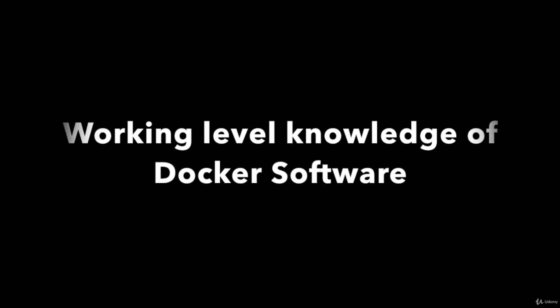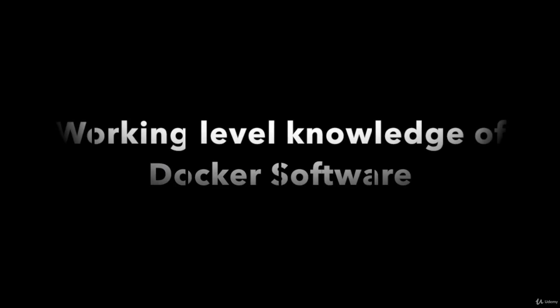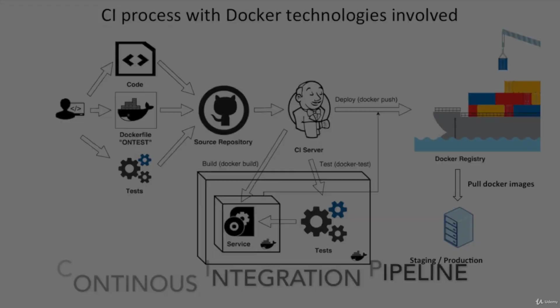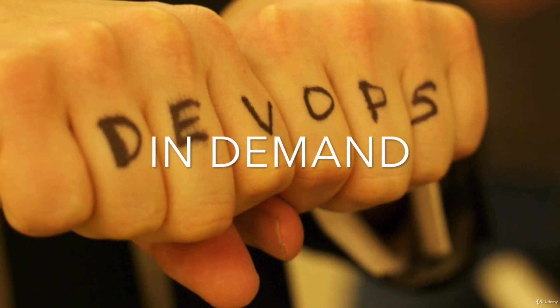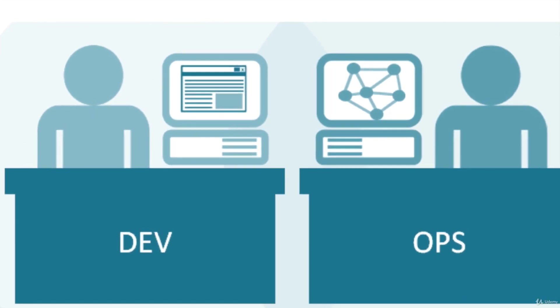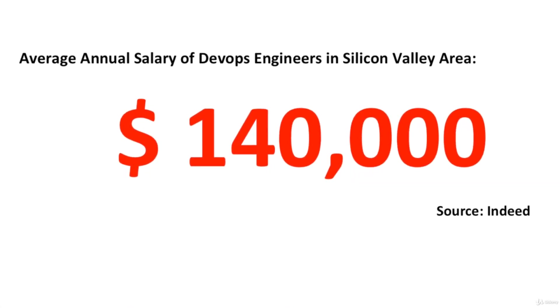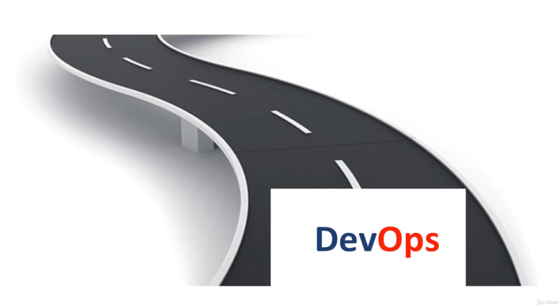At the end of this course, you're not only going to gain working-level knowledge of Docker software, but you'll also learn useful DevOps skills such as setting up continuous integration pipelines. DevOps engineers are in great demand in the IT industry. Companies are looking for developers who can develop and deploy applications. The average salary of a DevOps engineer is about $140,000 per year in the Silicon Valley area, which is 20% higher than the salary of a software engineer.